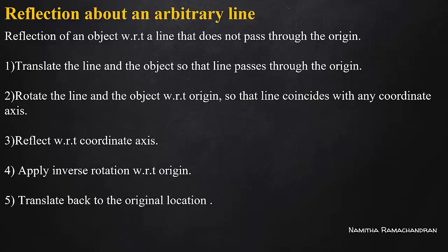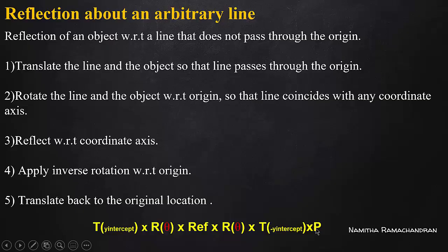So in this case, we work with the object point in column matrix form — first the object in column form, then translation to origin. We translate the line point to the origin. Then rotation to make that line coincide with any of the principal axes. After that, we apply the reflection. Then reverse rotation, then reverse translation. The y-intercept value is the translation parameter we have to consider.